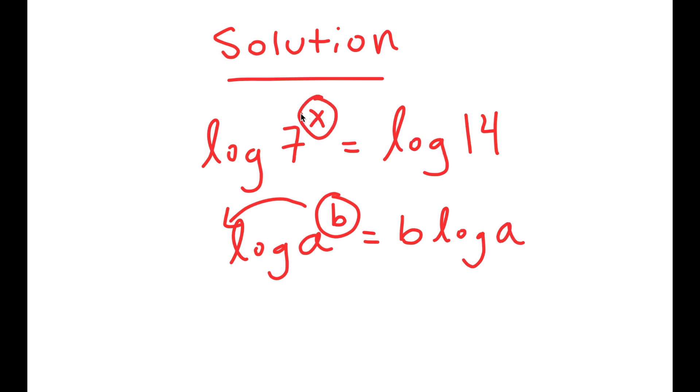In this case, I have log 7 to the power of x, and I can move x to the front. So I get x times log 7 is equal to log 14.